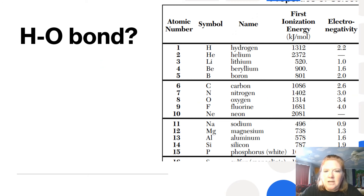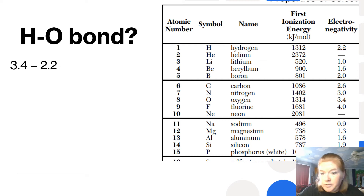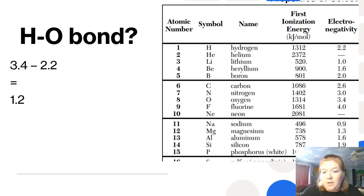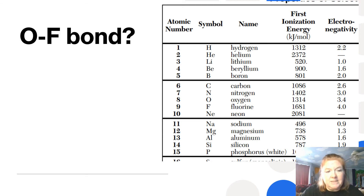Let's look at a bond between hydrogen and oxygen. We look up the electronegativities and subtract them — the order doesn't really matter — and we get 1.2. That means it's a polar covalent bond.